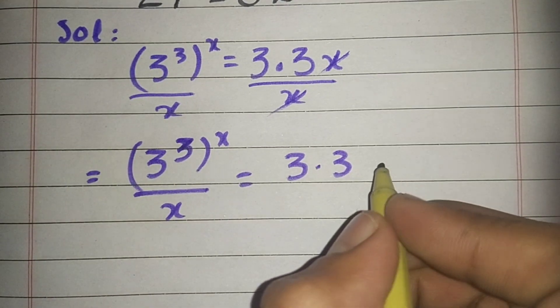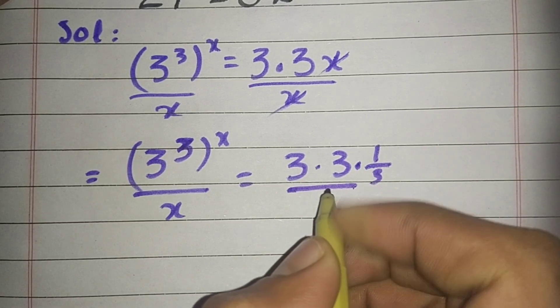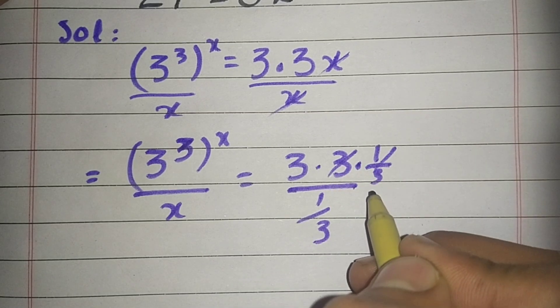Now multiply and divide 1 divided by 3 in this equation. So this 3 will cancel as 1 by 3.